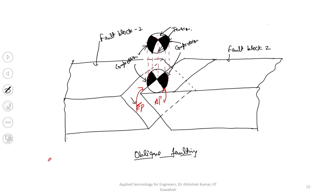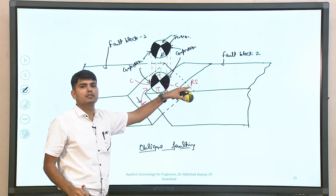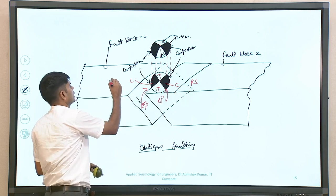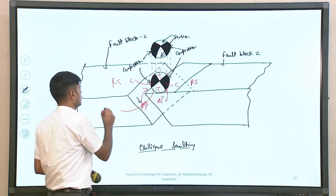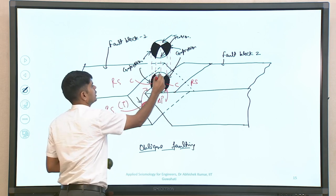The seismic moment M₀ is also a function of average displacement. The size of the earthquake can be correlated with respect to displacement, which can also be evaluated by means of Green's functions in terms of moment tensor solution. Moment tensor solution will help in understanding what kind of nature of forces has been mobilized, and subsequently using Green's functions you can find out what is the average displacement in the dominating directions — that is, the fault plane and other directions.